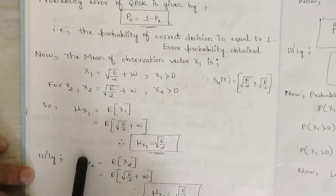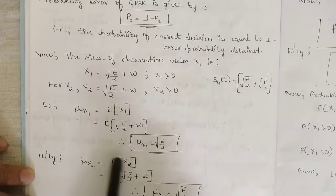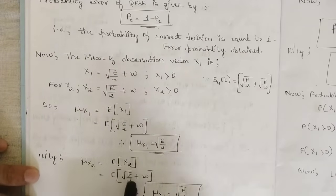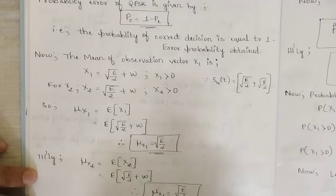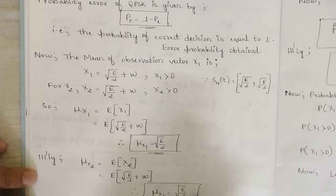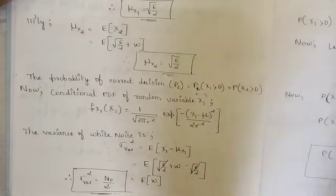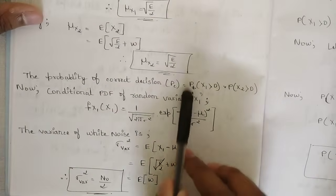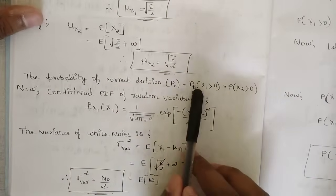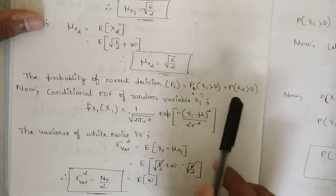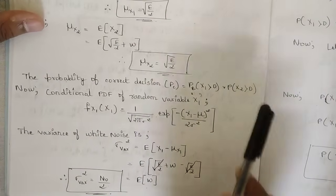Similarly, the mean of observation vector x2 is given by E[x2] = √(E/2) + w, again giving the same mean value √(E/2). The probability of correct decision PC is then given by P(x1 > 0) × P(x2 > 0).